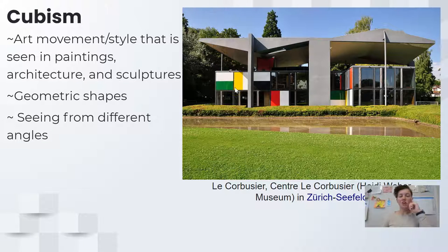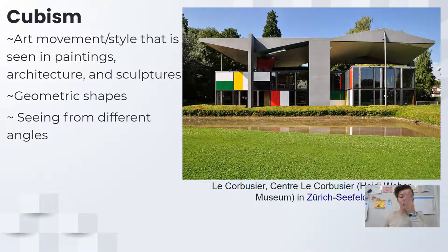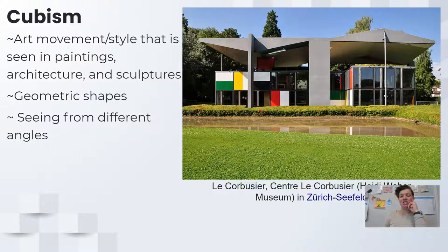When we talk about cubism in paintings, we mean it's a type of art where you can see things from different angles. So instead of being flat and just seeing the front, you can also see the side. You're going to see that in just a minute.